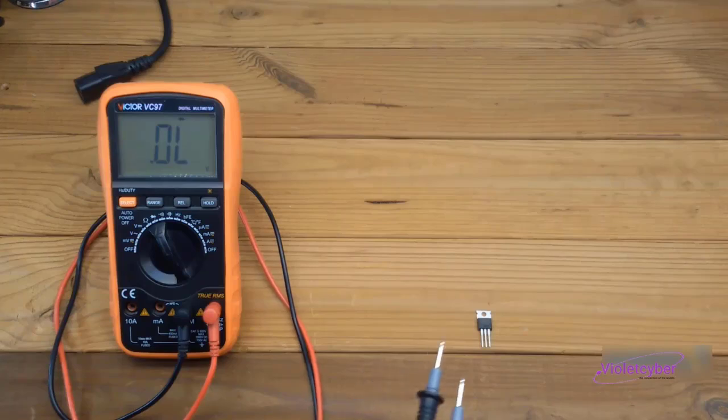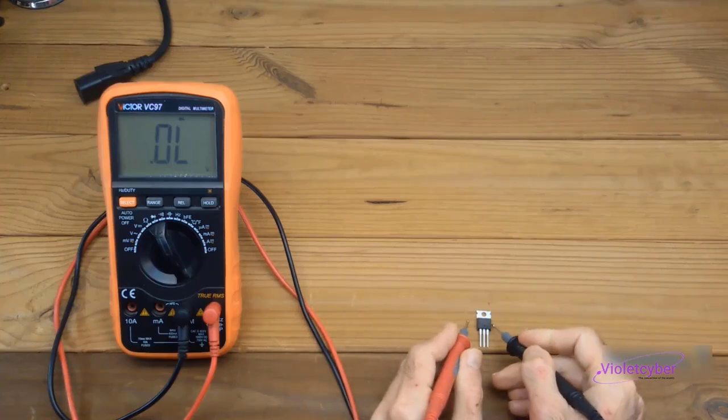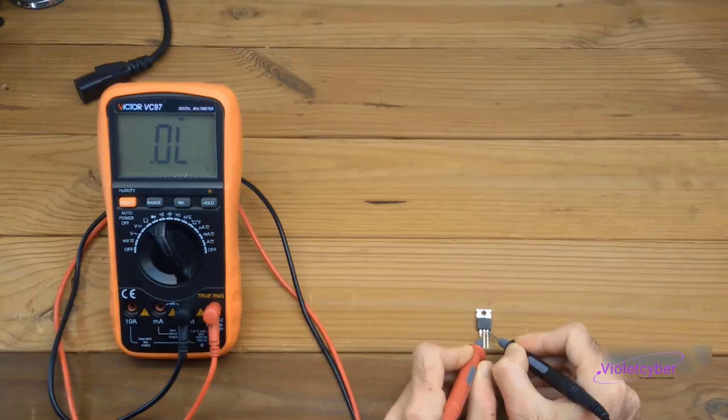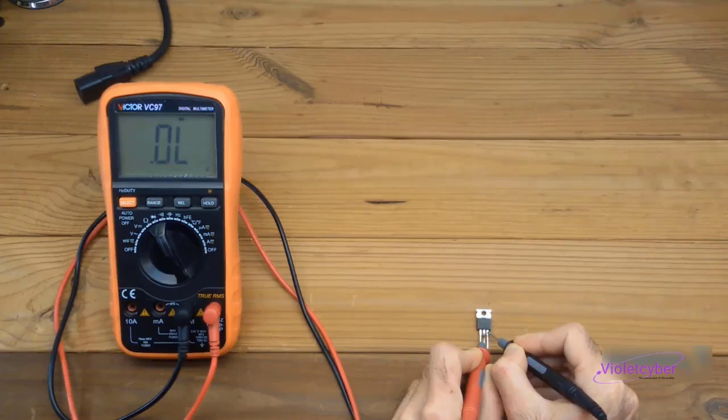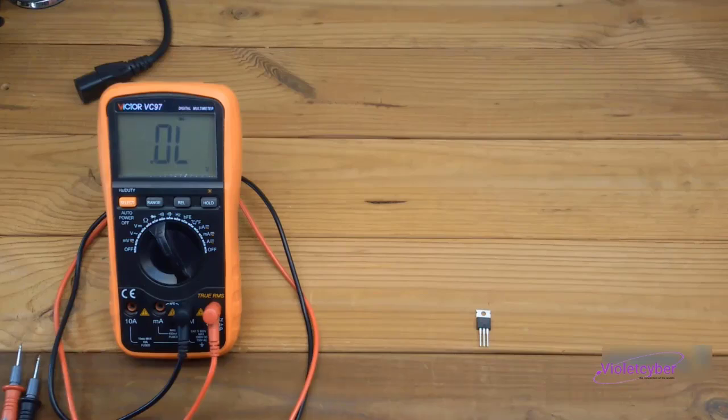When the MOSFET is turned off, the connection between the pins will be cut. To confirm this, I connect the black probe to the source, and the red probe to the drain. If the MOSFET is functioning correctly, we shouldn't see any reading on the multimeter. And yes, as you can see, the multimeter shows no reading, indicating the connection between the pins has been cut.